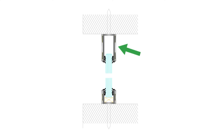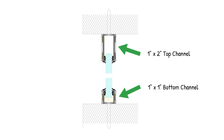This is the top channel — it's a one by two channel, pretty typical. And this is the bottom channel, it's a one by one. The system is designed to be pocket set. Pocket setting is when you push the glass into one channel, swing it into place, and drop it into the other one.